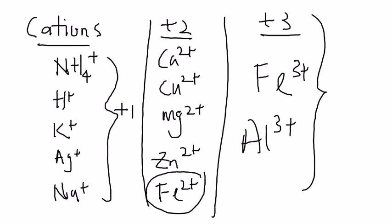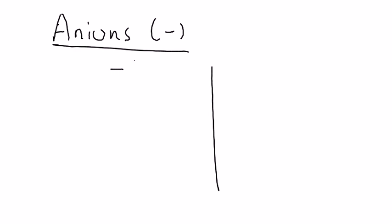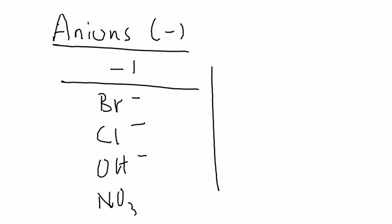Now what about the anions? Let's look at the usual anions that we have. Anions are referring to negative charges. We have two categories, basically. One is the negative one, examples like bromide, chloride ion, hydroxide, and nitrate NO3-.